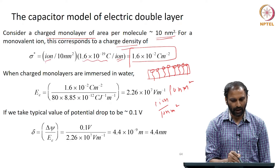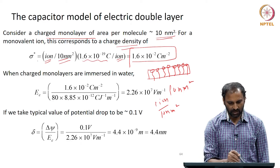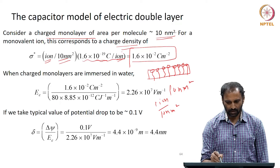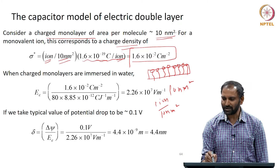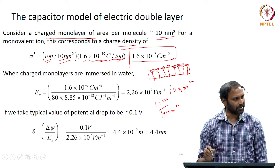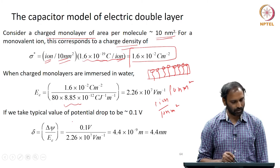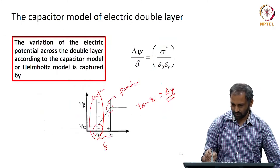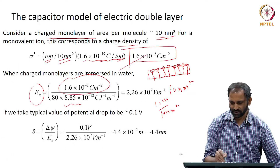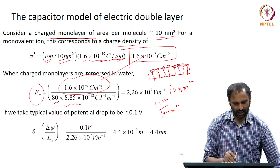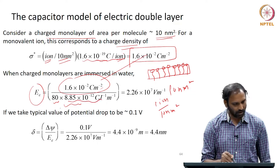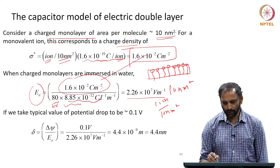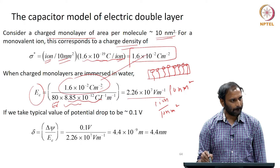The charge density is 1 ion per 10 nm², giving σ* = 1.6 × 10⁻² C/m². Substituting into the electric field expression E = σ*/(ε₀·εᵣ), the electric field E becomes 2.26 × 10⁷ V/m.